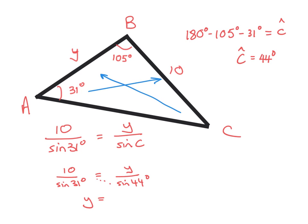This thing goes up, you get 10 times sine 31 times sine 44 over sine 31, and if you get your calculator out, that equals 13.49.